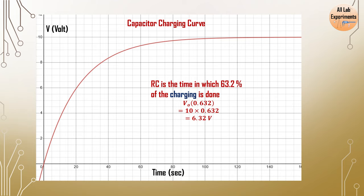So just we pick this point 6.32 volt and corresponding to that voltage we observe the time. So this is close to 22 seconds which we have taken in our example. In the same way we are going to plot capacitor discharging curve.